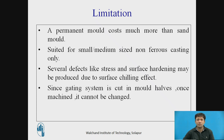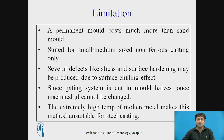Since the gating system is cut into the mold halves and once machined it cannot be changed — it can be repaired but at cost, and many times the mold itself needs to be discarded — this is generally not economical. Also, the extremely high temperature of molten metal makes this process unsuitable for steel casting.